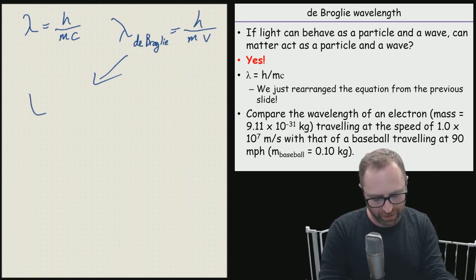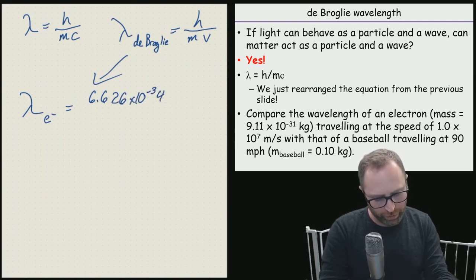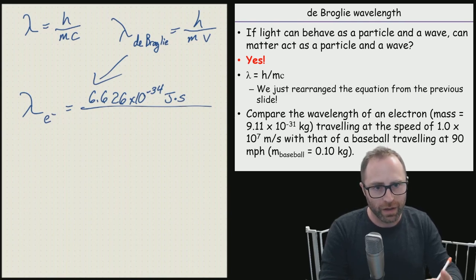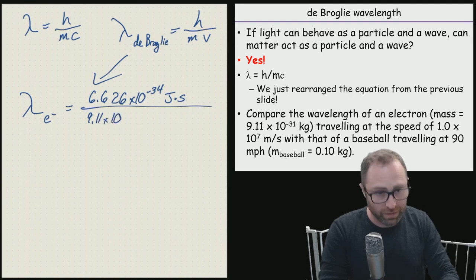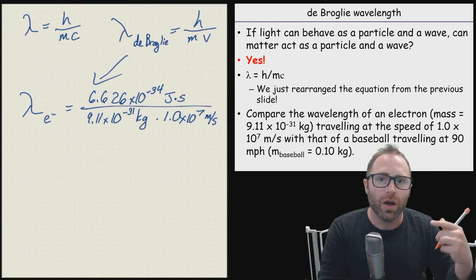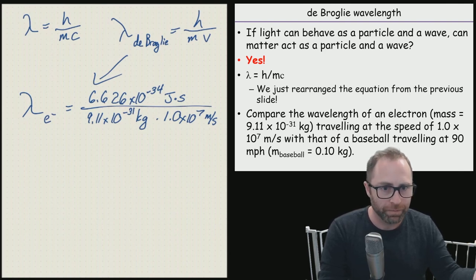The wavelength of our electron is going to equal that 6.626 times 10 to the negative 34th joules times second. Our mass is going to be the 9.11 times 10 to the negative 31st kilograms times our velocity, which is going to be the 1.0 times 10 to the seventh meters per second. And the units are all going to cancel out.